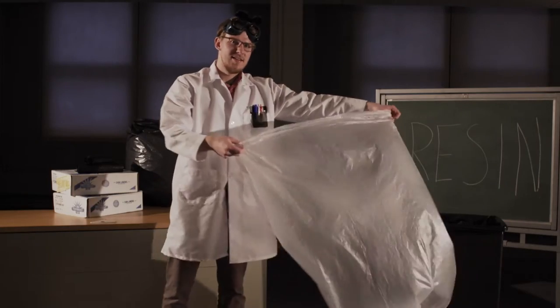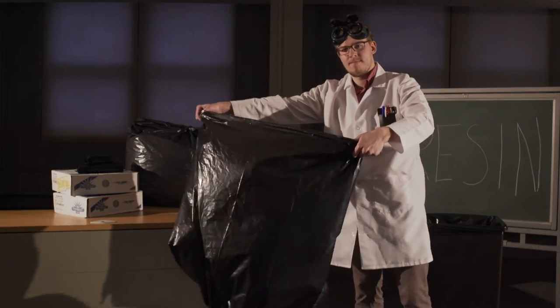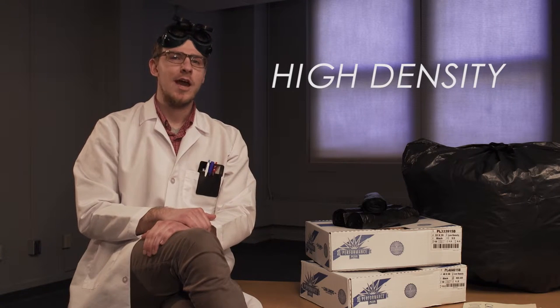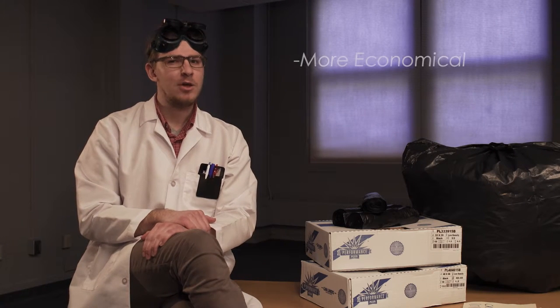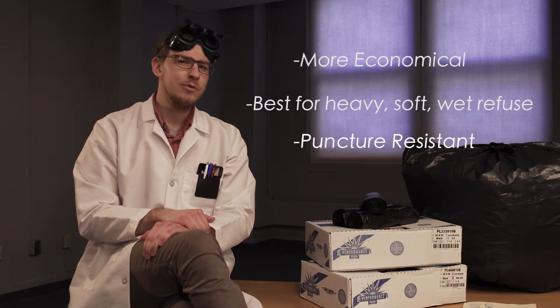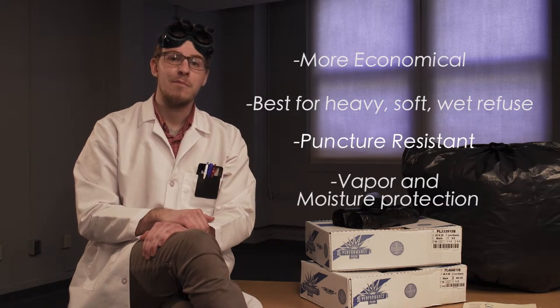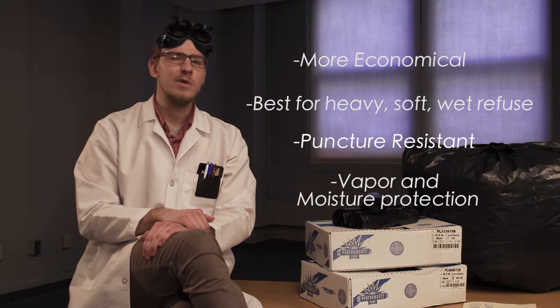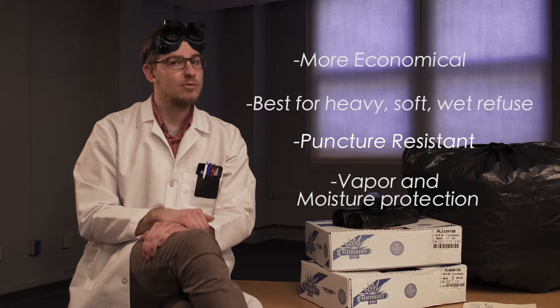The basic raw material we use in liner manufacturing is called resin. Two types of polyethylene molecules give us the choice between two types of bags, high density and linear low density. High density liners are great if you're looking for an economical choice for heavy, soft, or wet refuse, like leaves or food waste. They're puncture resistant and have superior vapor and moisture protection, which have gained them USDA and FDA approval for use with food.